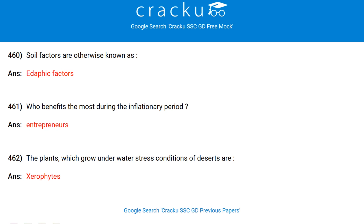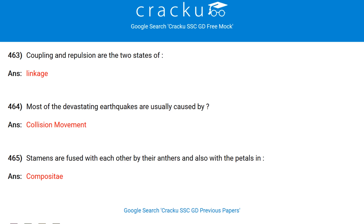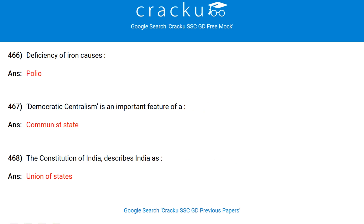The chemical name of plaster of Paris commonly used for setting broken bones is calcium sulphate hemihydrate. Total assembly segments in Delhi are 70. Transition ions absorb light in the visible region. Virtually treeless, sparse vegetation is found in the tundra. Flywheel is an important part of a steam engine because it helps the engine in keeping the speed uniform. Soil factors are otherwise known as edaphic factors. Who benefits the most during the inflationary period? Entrepreneurs.